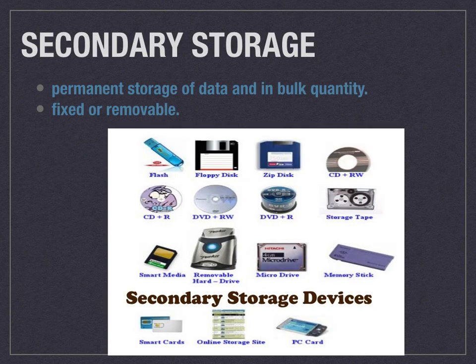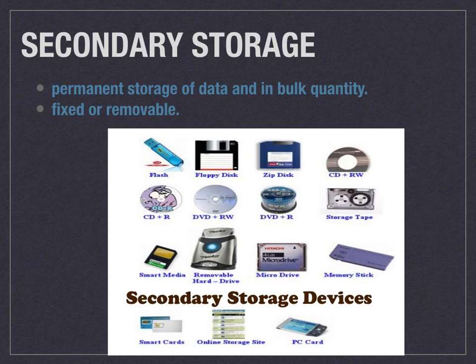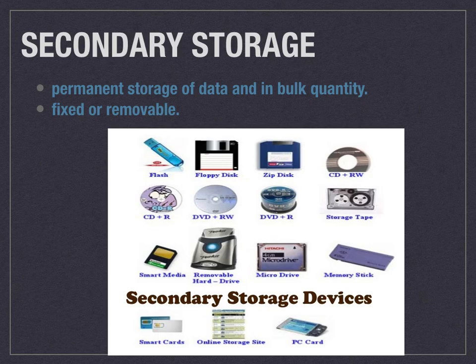Secondary storage is considered the permanent memory in your computer. It is characterized by its slowness and cheapness — it is cheaper than RAM but stores data permanently. This data is not directly processed by the CPU; the content in secondary storage is first copied into RAM and then transferred to the CPU. Secondary memory is slower than main memory but has more storage capacity than primary memory. Some examples of secondary storage devices are floppy disk, CD drive, hard disk, and smart media.